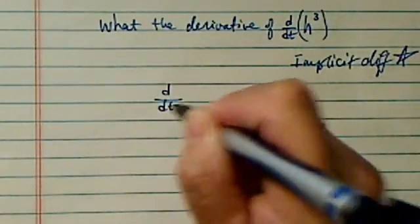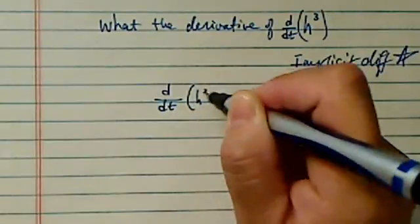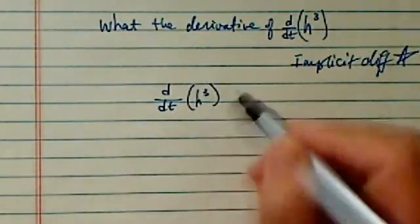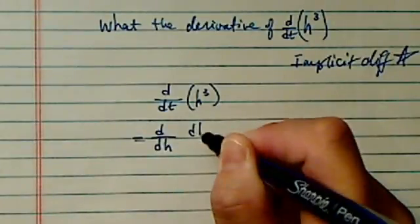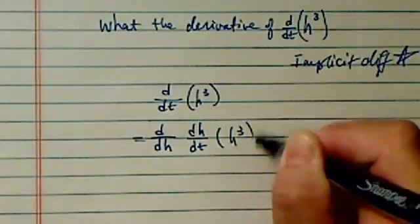If we are doing d/dt of h³, a function of h cubed, you can think of this one as d/dh times dh/dt of h³.